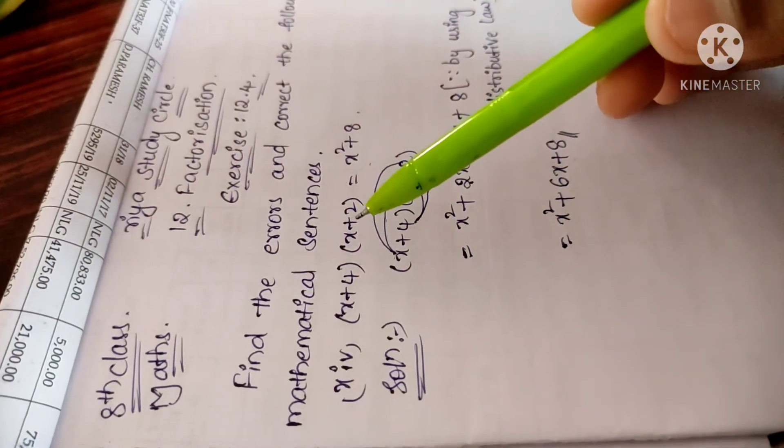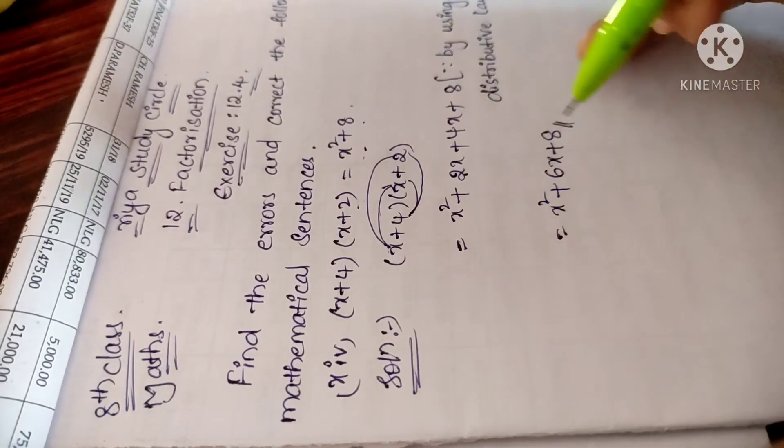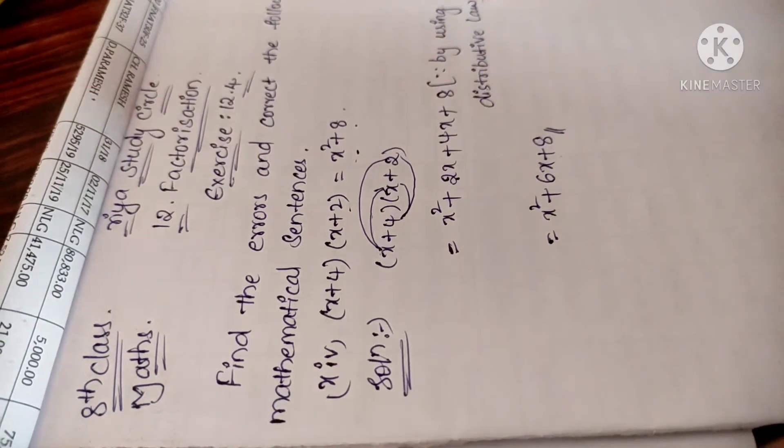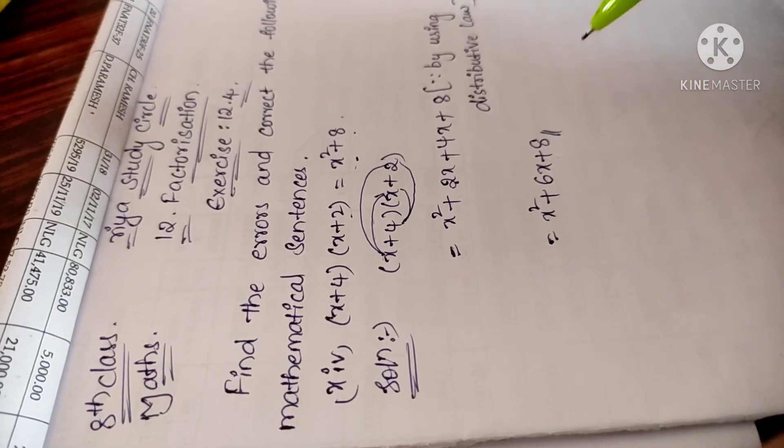So in this mathematical sentence they gave x square plus 8. That means here they missed 6x. So the correct solution of this problem is x square plus 6x plus 8.